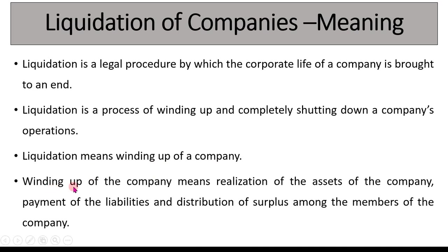Winding up of a company means realization of assets of the company, then payment of liabilities, and distribution of surplus amongst the members of the company. When the company is closing down, whatever assets the company has will be realized. After realization of those assets, payment of liabilities is made, and whatever surplus remains is distributed amongst the shareholders of the company.